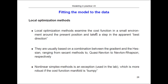Local optimization methods look around themselves — they take the current point and look in a small neighborhood to find the best direction to go. Common methods include quasi-Newton methods: Newton-Raphson is fastest but most unstable, while quasi-Newton is very stable but slow. In the computer lab we use the non-linear simplex method, which is good when the cost function is a little bumpy and not completely smooth.